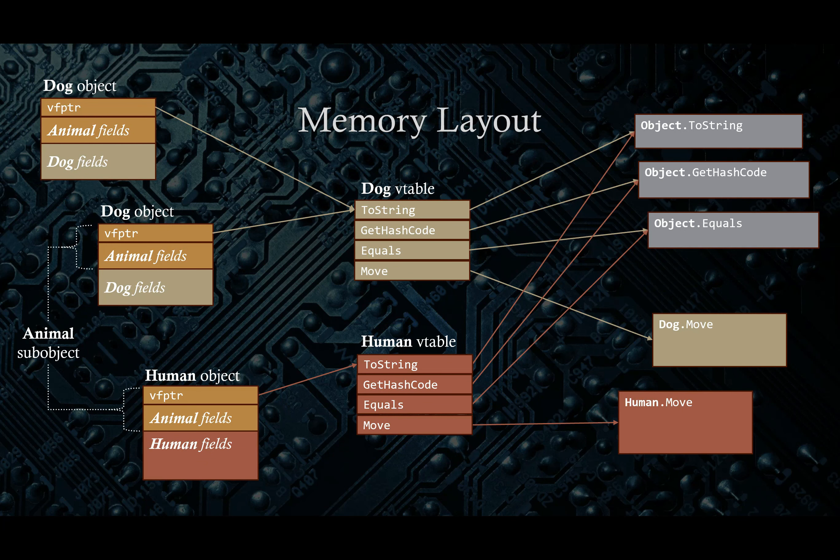The final thing I want to talk about is to give an idea of how all this works under the hood: how objects are represented in memory, and in particular how virtual dispatch works — that is, how virtual and abstract methods and properties allow overriding, and how the proper code is executed based on the dynamic type of an object.